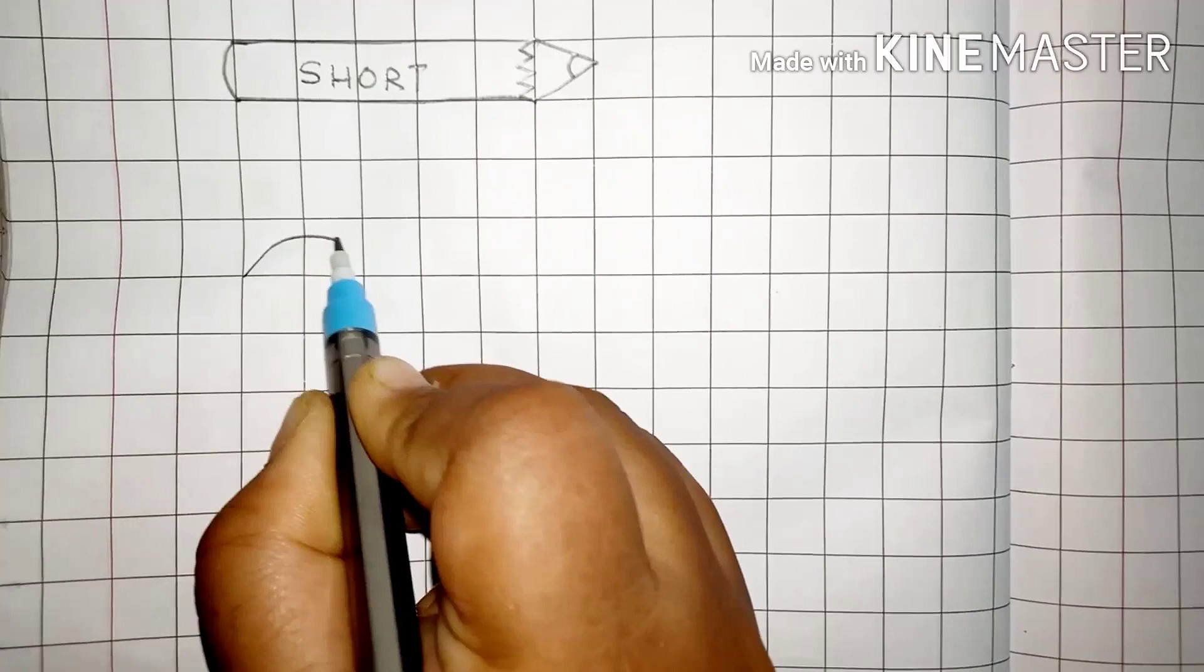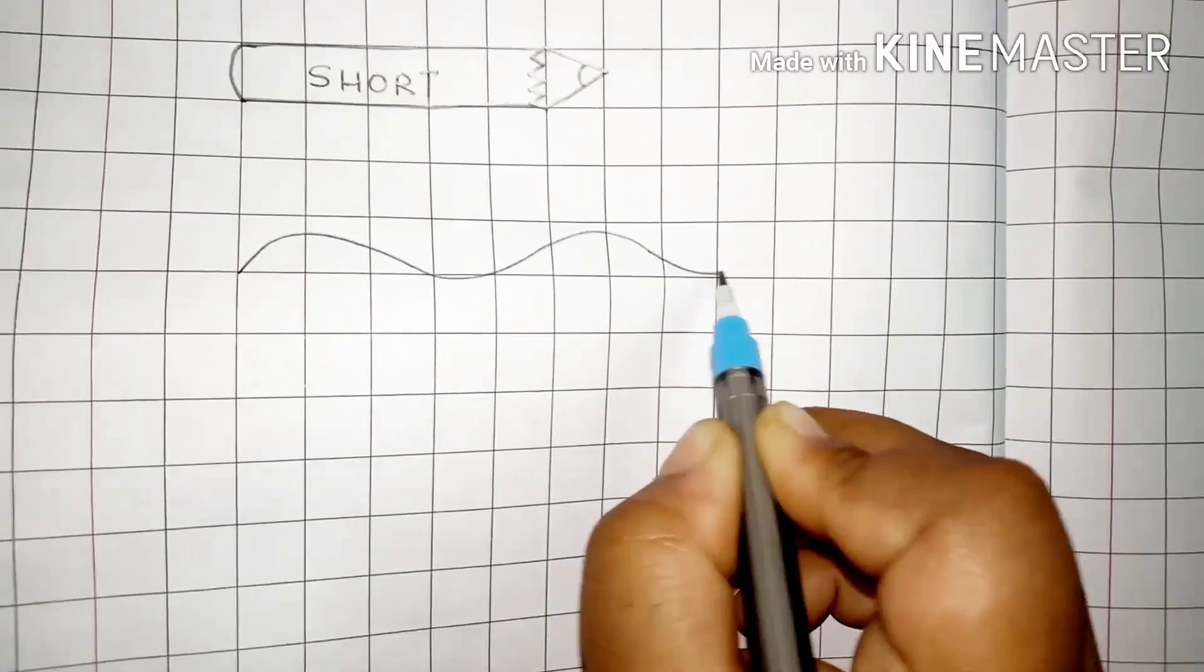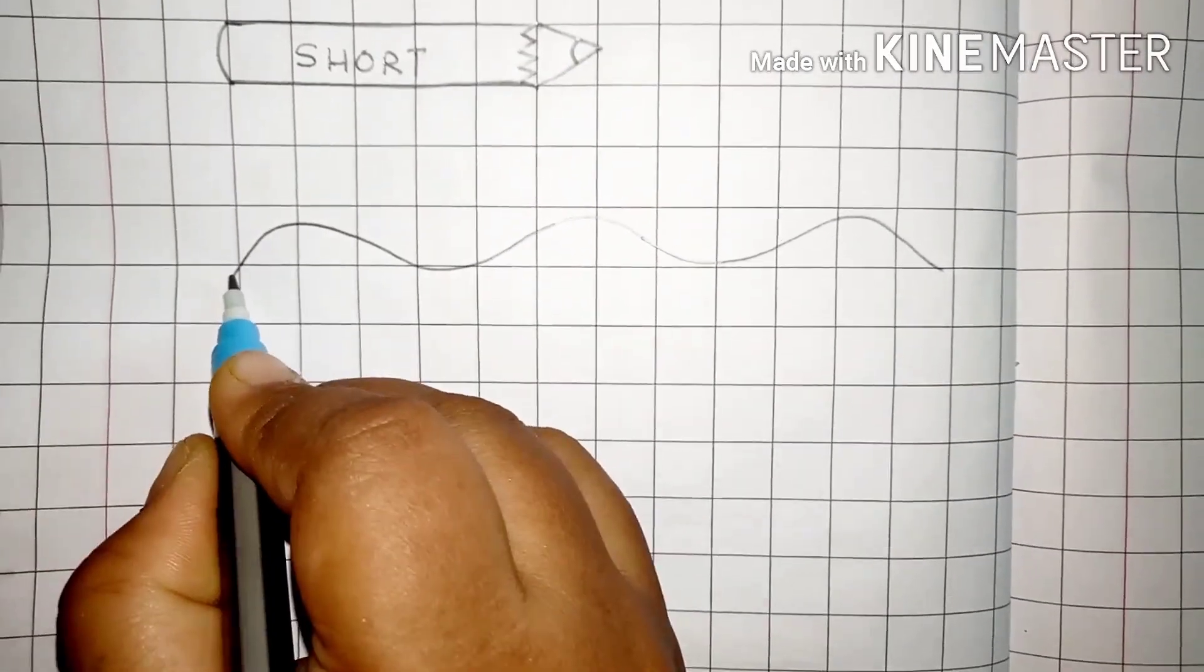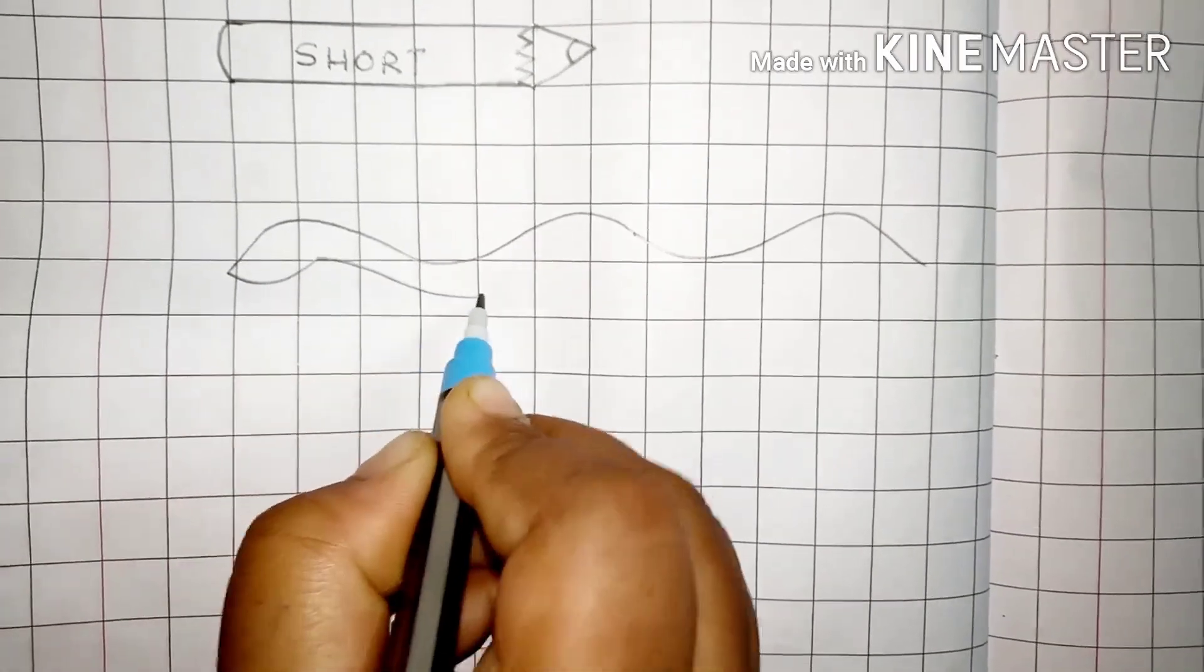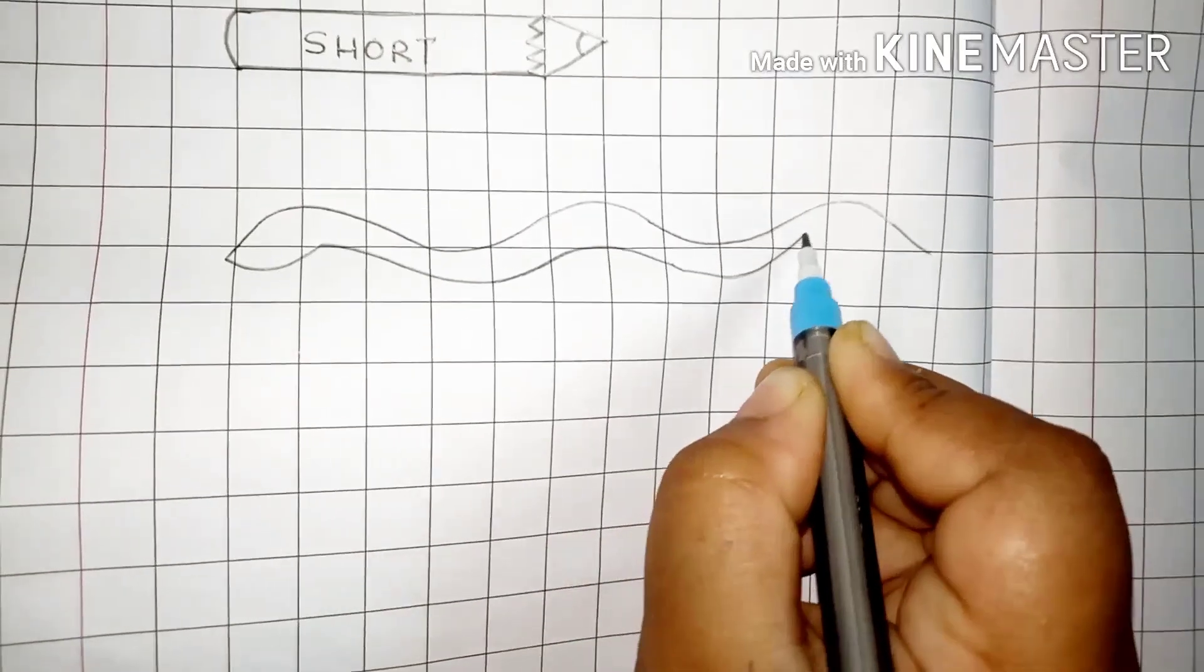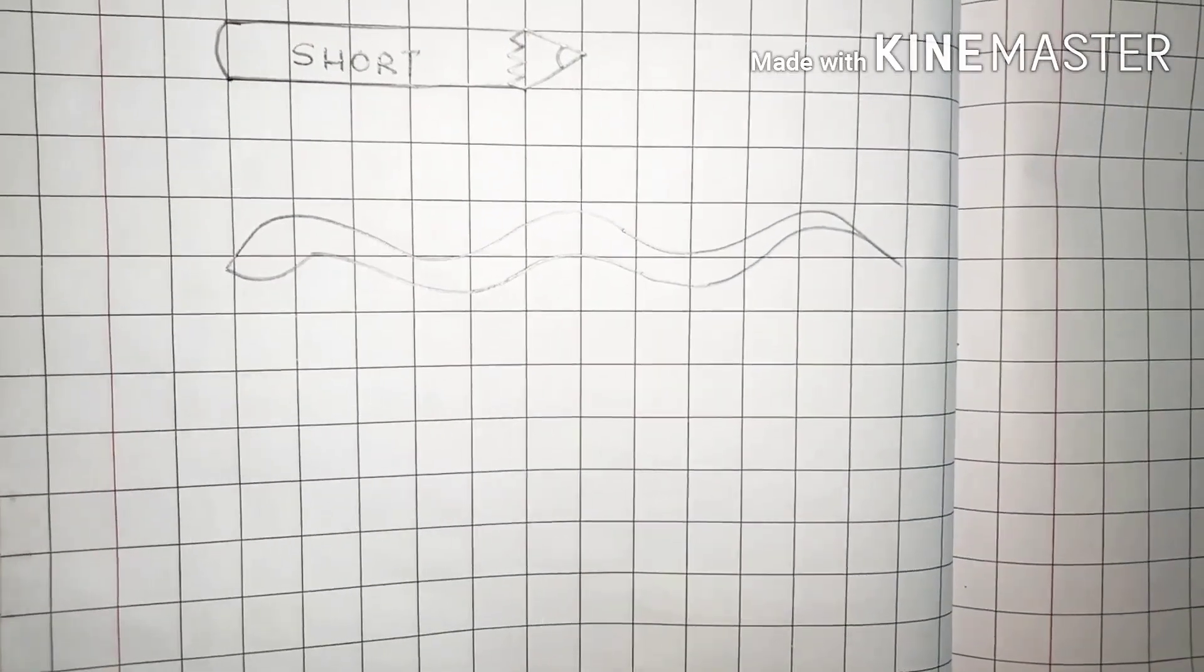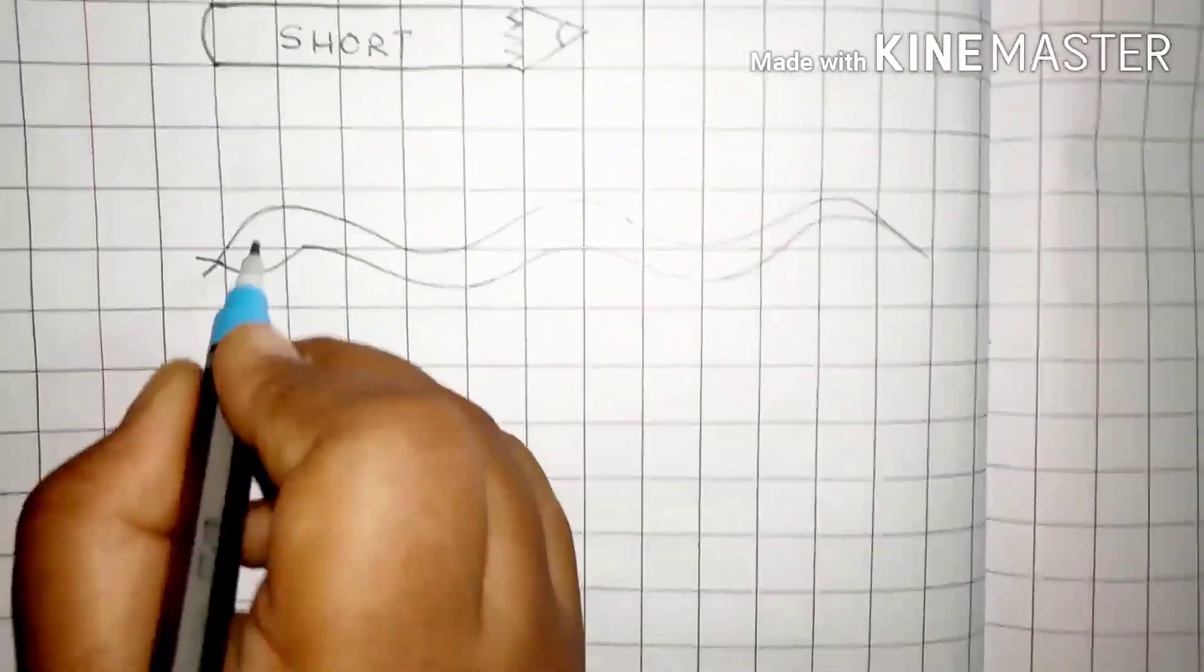Then, we will draw a snake. Draw random curves like this. And draw a small circle.